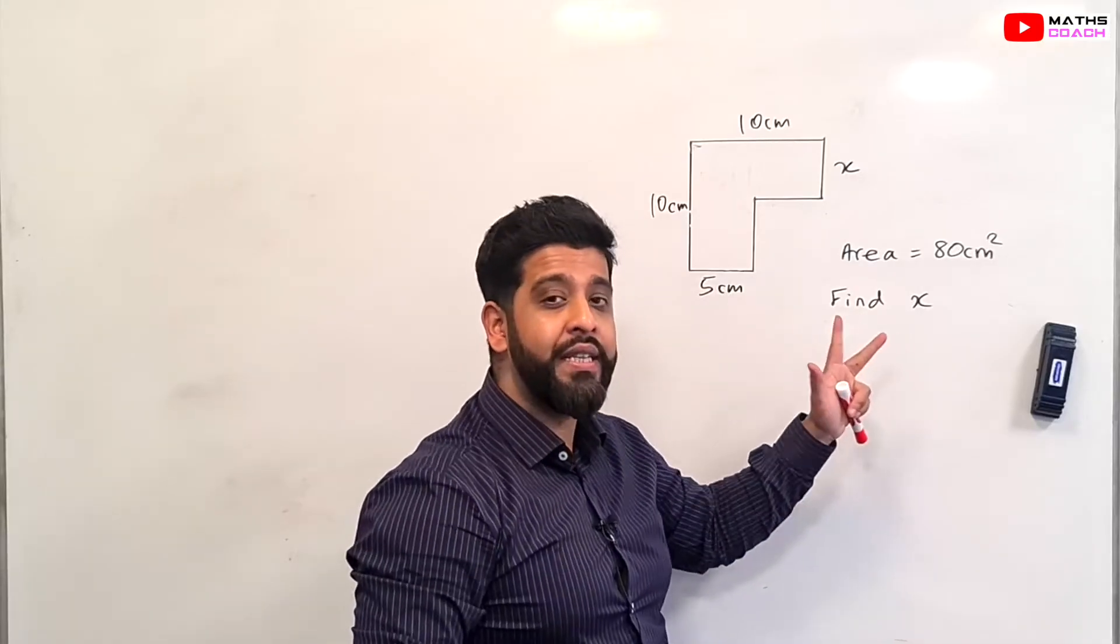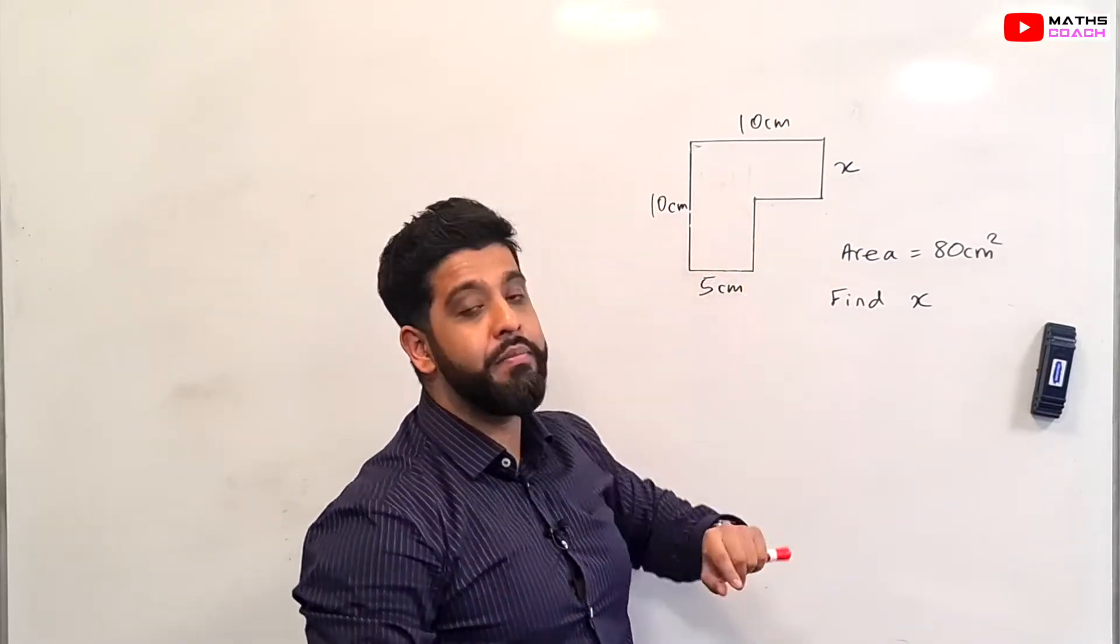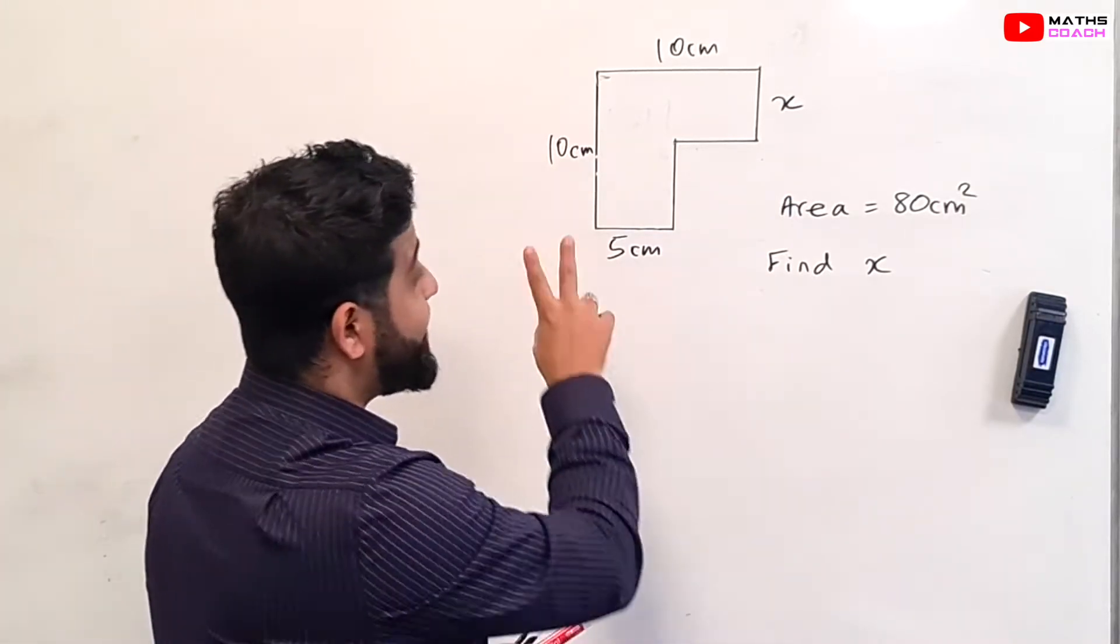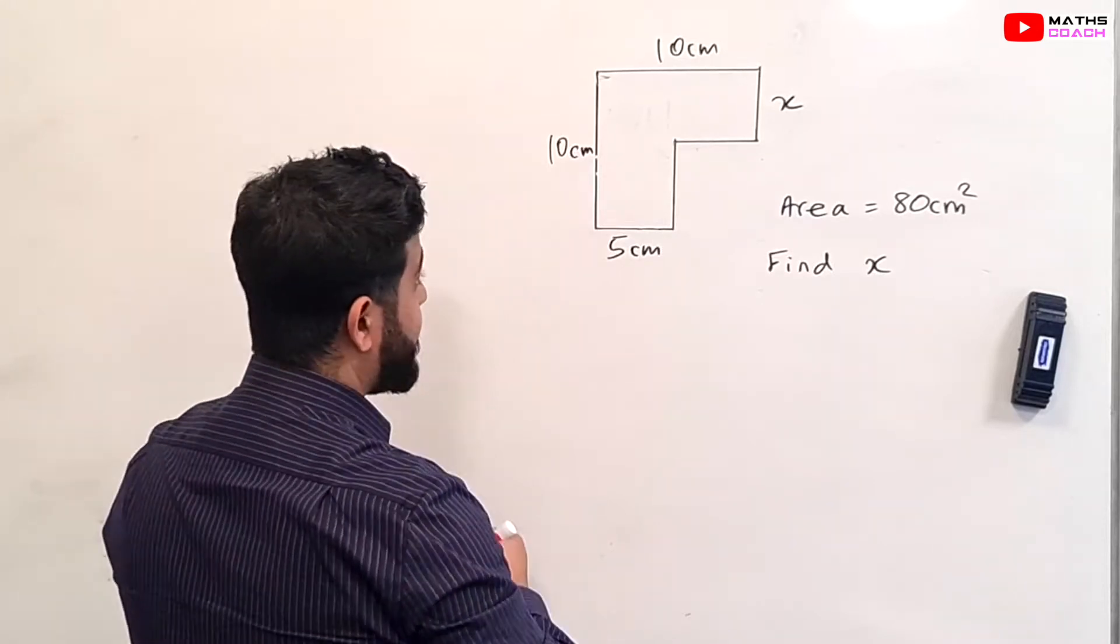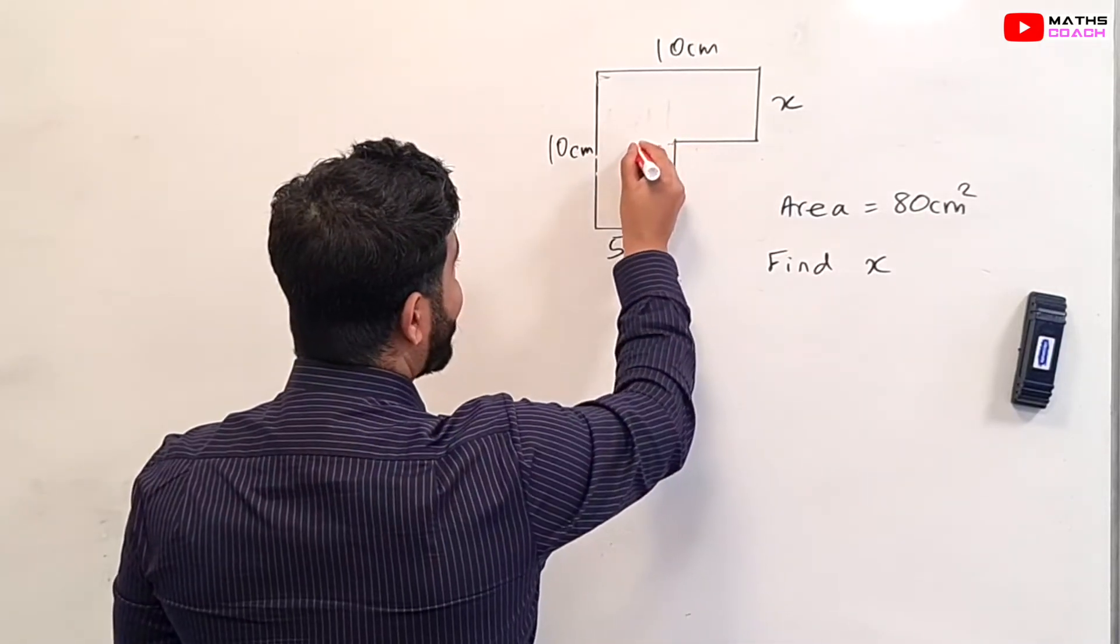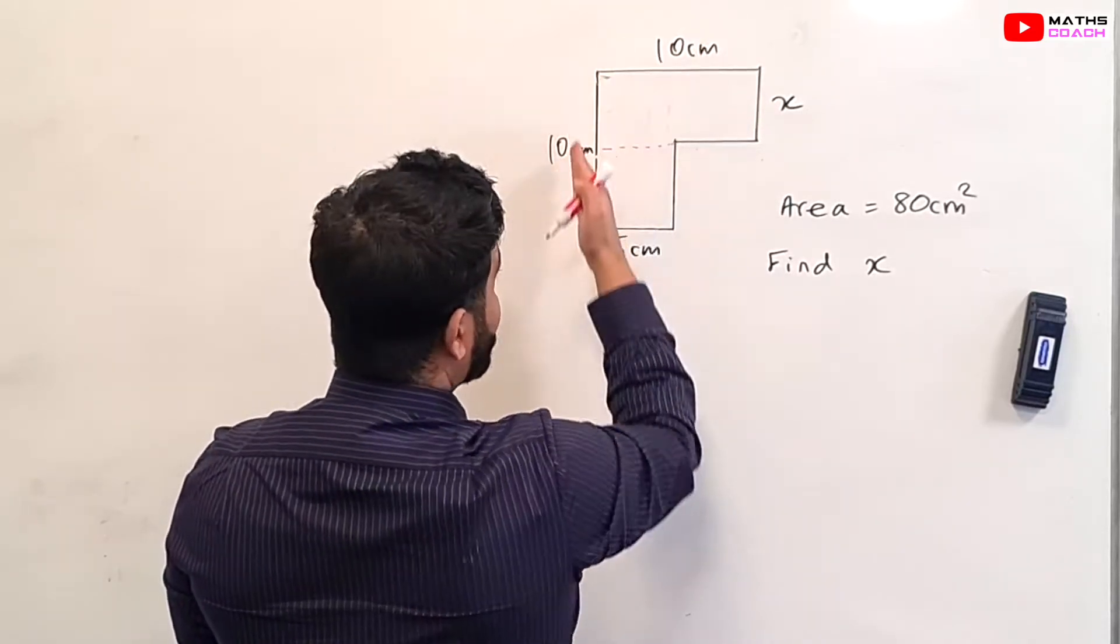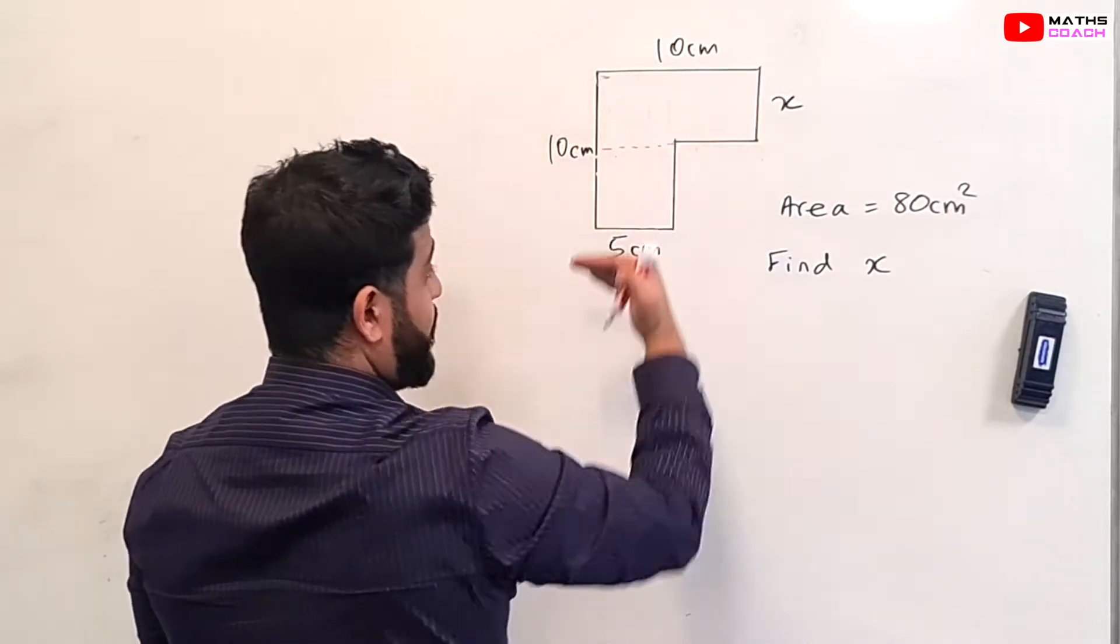Since we are going to be finding the area for the shape, we don't need to bother too much with the missing lengths. Now there is something that you need to be aware of here and that is the breaking up of this shape. If you break the shape up like this, you've got an option of breaking the shape up here or breaking it this way. So you've got a rectangle here and this little rectangle there or you can break it up the way I've shown you here.